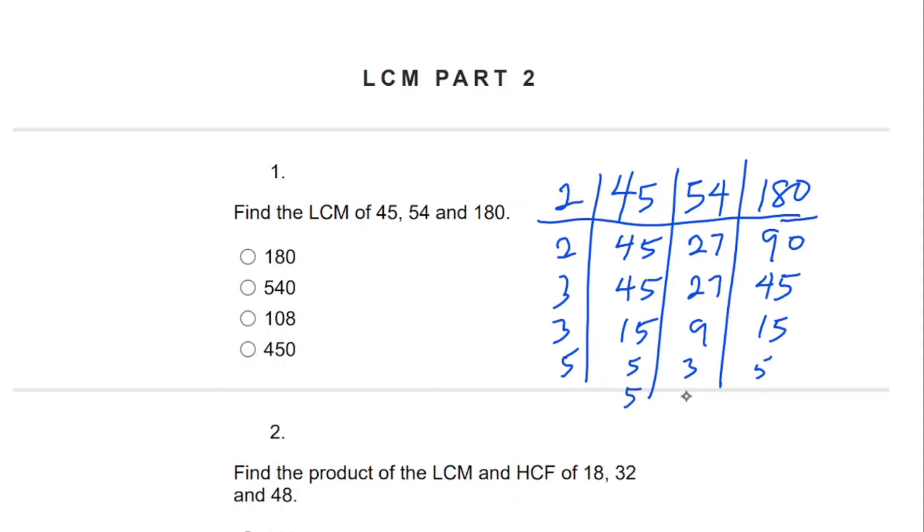We get 5, 1, and 5. 5 can go now, giving us 1, 1, 1. Until you get to 1, that's when you stop. Unlike HCF, you must make sure you use the number that can divide them exactly. So our LCM will be 2 times 2 times 3 times 3 times 3 times 5.